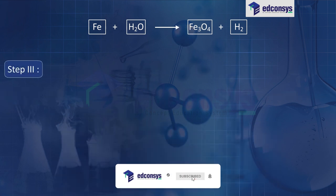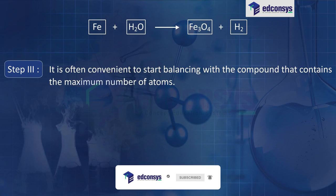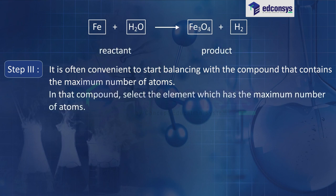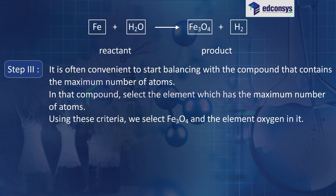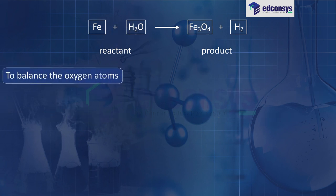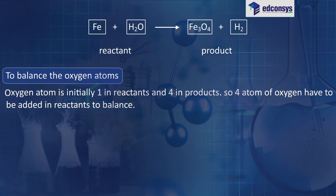Step 3: it is often convenient to start balancing with the compound that contains the maximum number of atoms — it may be a reactant or a product. Using these criteria, we select Fe₃O₄ and the element oxygen in it. There are four oxygen atoms on the right-hand side and only one on the left-hand side. Oxygen is initially 1 in reactants and 4 in products.